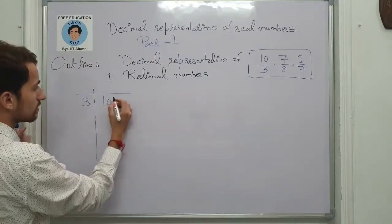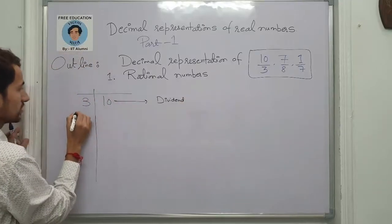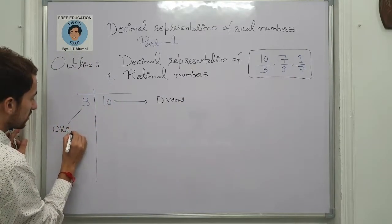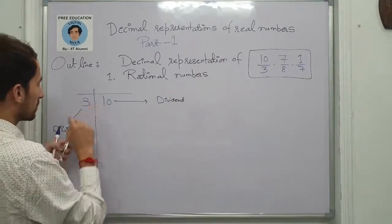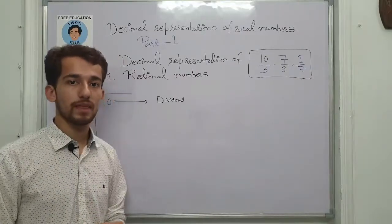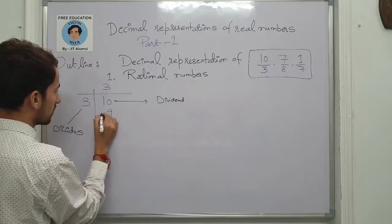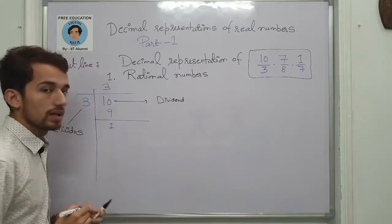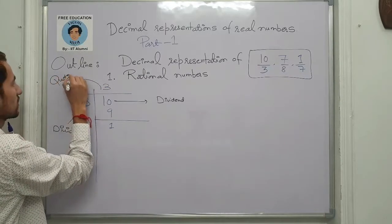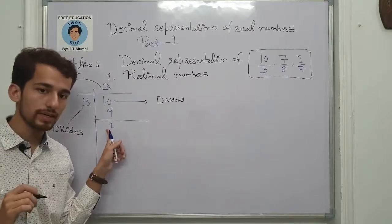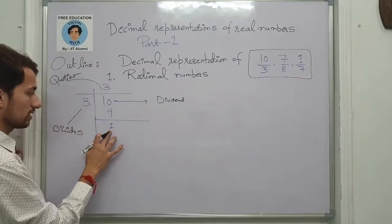The divisor is the number which divides, and the dividend is the number which we are trying to divide. The number through which we divide is the divisor. Now, pause the video and try to divide it yourself. After dividing, you get a quotient, and there is also a remainder. Remainders are very important in today's lecture. I cannot divide further because it's less than the divisor.